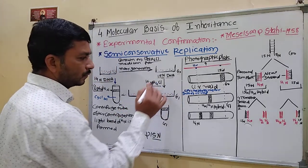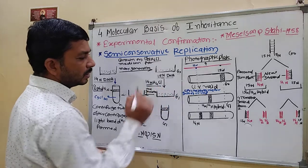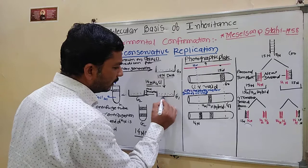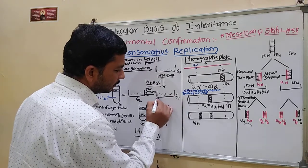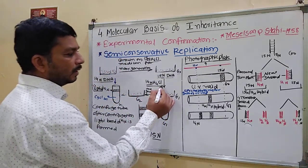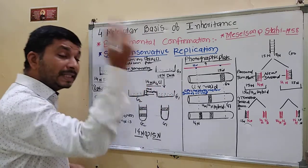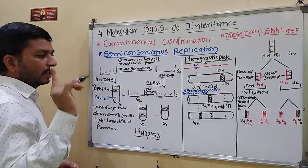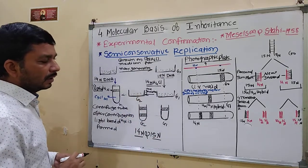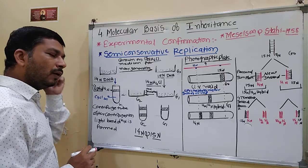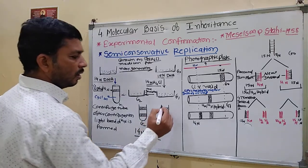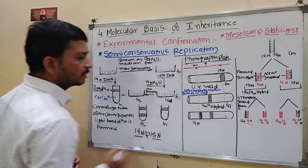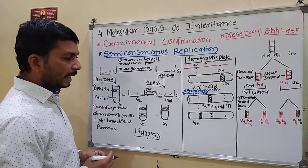They observed for one generation. When they took one generation sample, they found there is a presence of 14N. After another generation, what did they observe? They found a 15N generation result as well. So how could they confirm whether this is 15N or 14N? For that, they took the sample and placed it inside the CsCl solution.